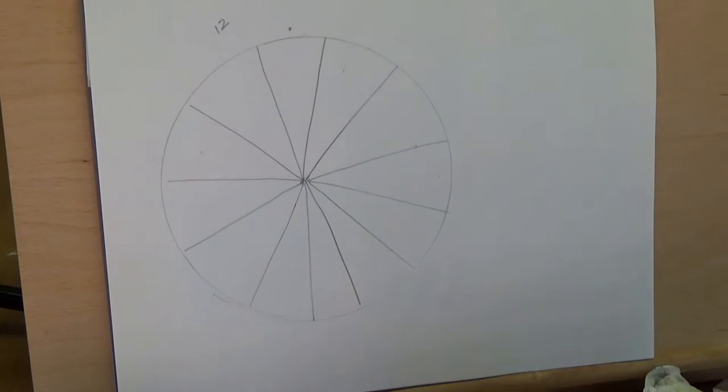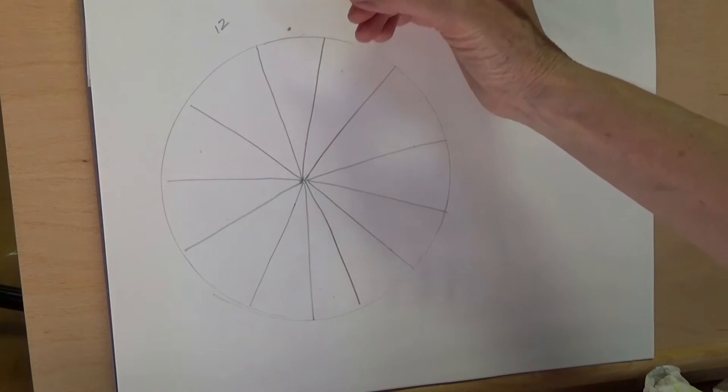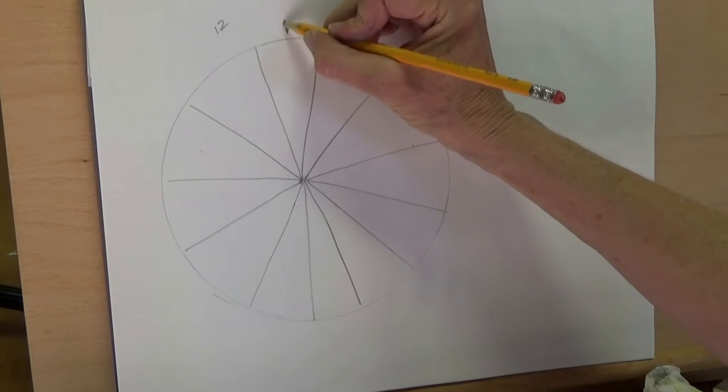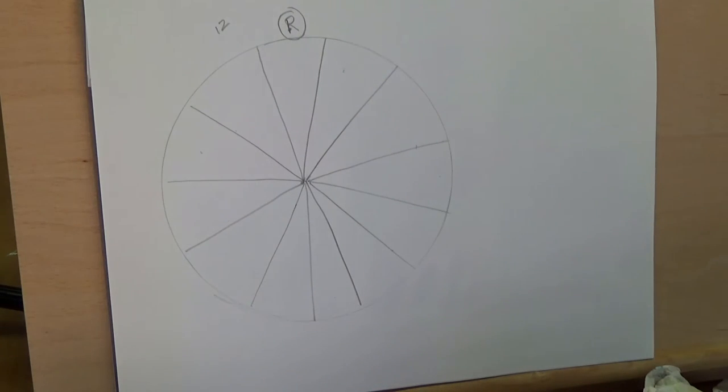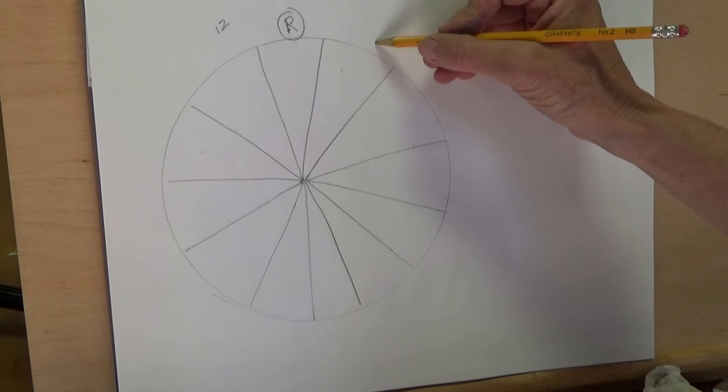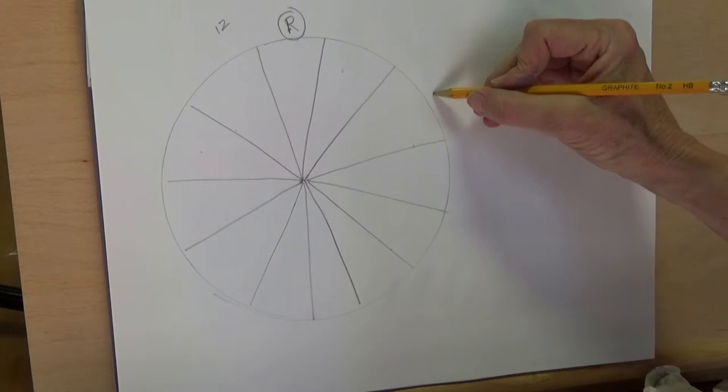Now one of the top sections you're going to mark inside a circle red or R for red. Then you're going to skip one, leave it blank, and you're going to mark this with a square, just leave it blank.